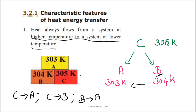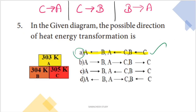The three possible heat flow directions are: first C to A, second C to B, third B to A — all flowing from higher to lower temperature. So option A is correct. In such questions, you need to identify higher-to-lower flow first, then choose the correct option based on arrow marks.